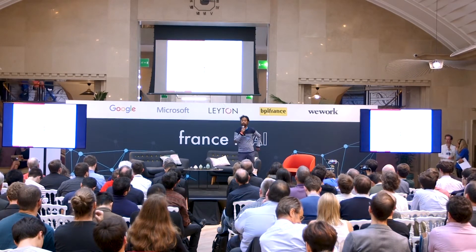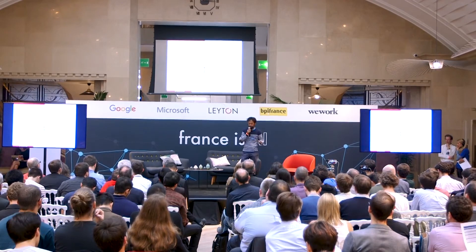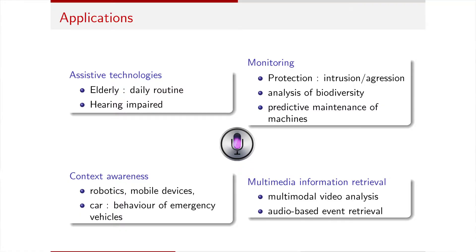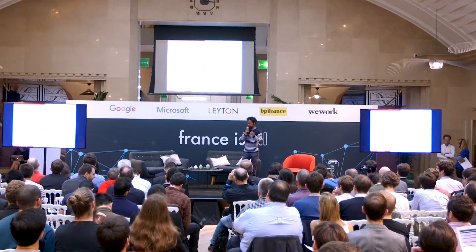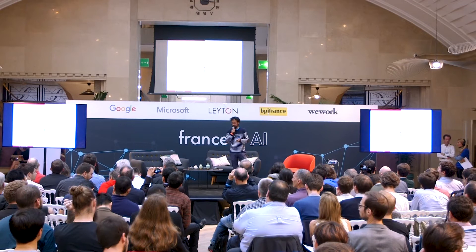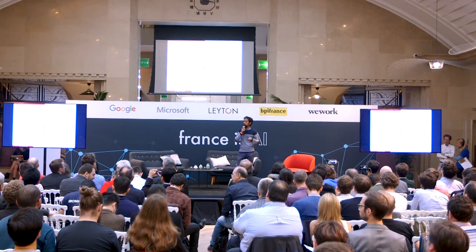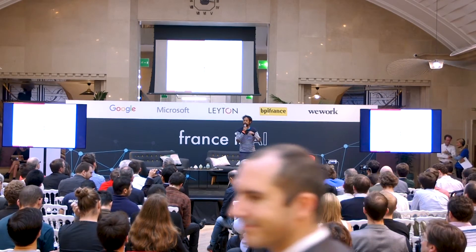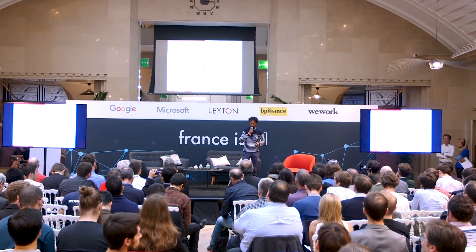What kinds of applications are these used for? You can have assistive technology for the elderly, for checking daily routines or for the hearing impaired. This technology can be used for context awareness on mobile devices or robotics — for instance, if my smartphone understands I'm at a conference, it will put itself in silent mode. There is also interest for smart cars for understanding surroundings using audio, like detecting emergency vehicles such as ambulances or trucks. Other applications include monitoring for biodiversity — for example, counting the number of bird species in a rainforest using computational audio analysis.